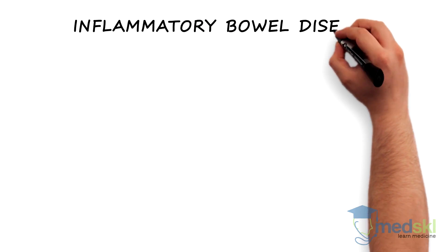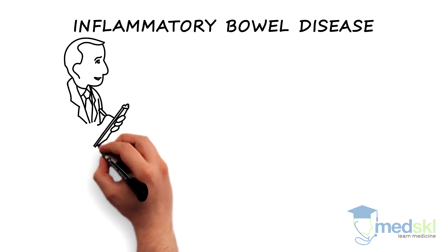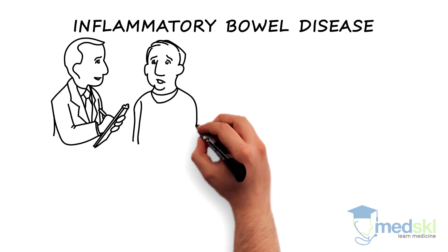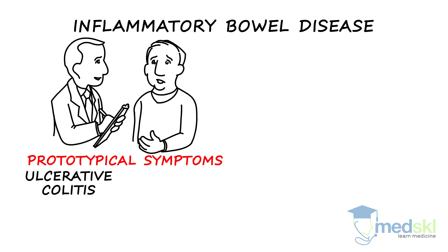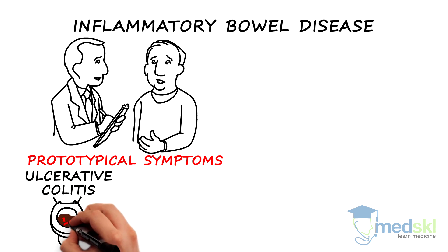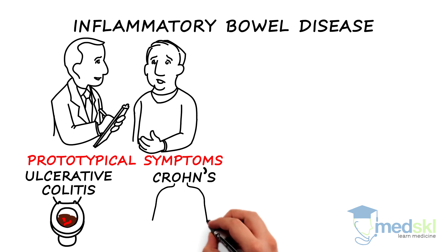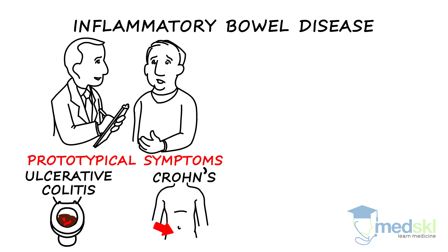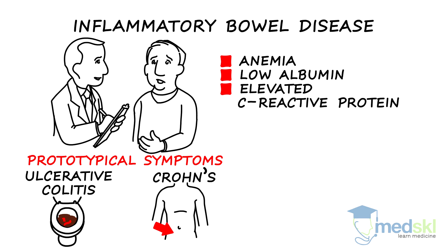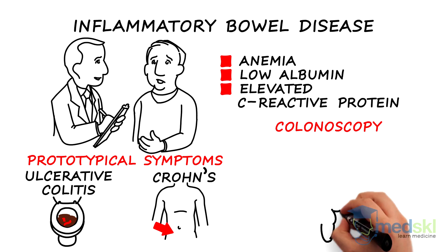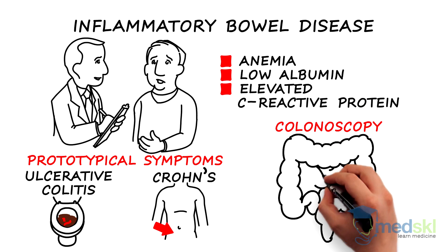Inflammatory bowel disease is next to be excluded. This requires a history of prototypical symptoms: for ulcerative colitis, bloody diarrhea; for Crohn's, right lower quadrant pain. Laboratory work such as findings of anemia, low albumin, and elevated C-reactive protein should be assessed, and finally, if still considered, a colonoscopy with a view of the terminal ileum.